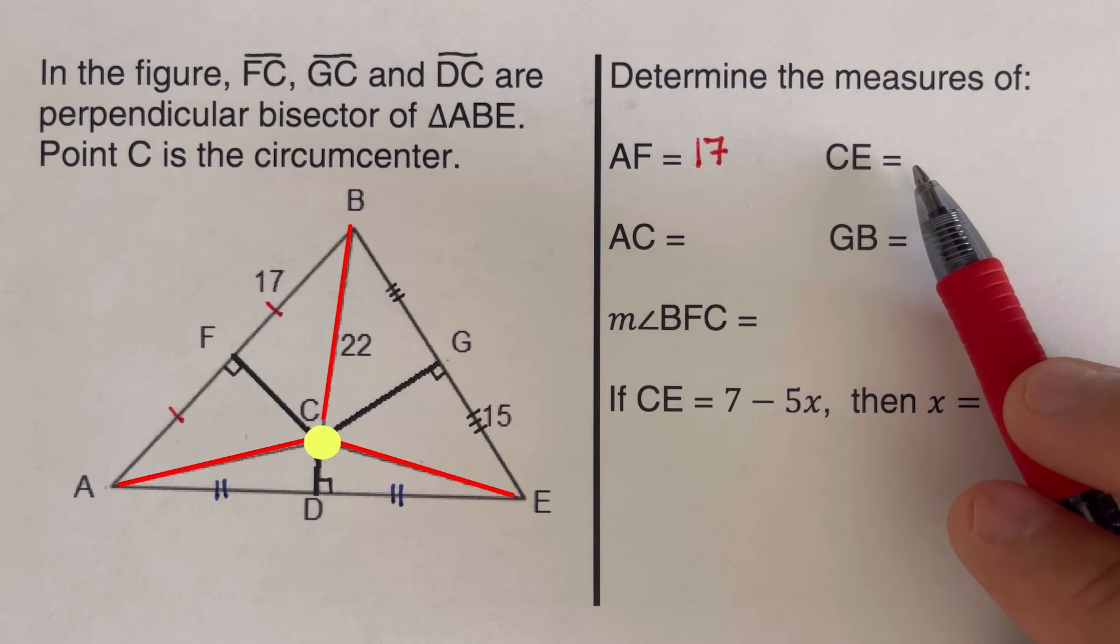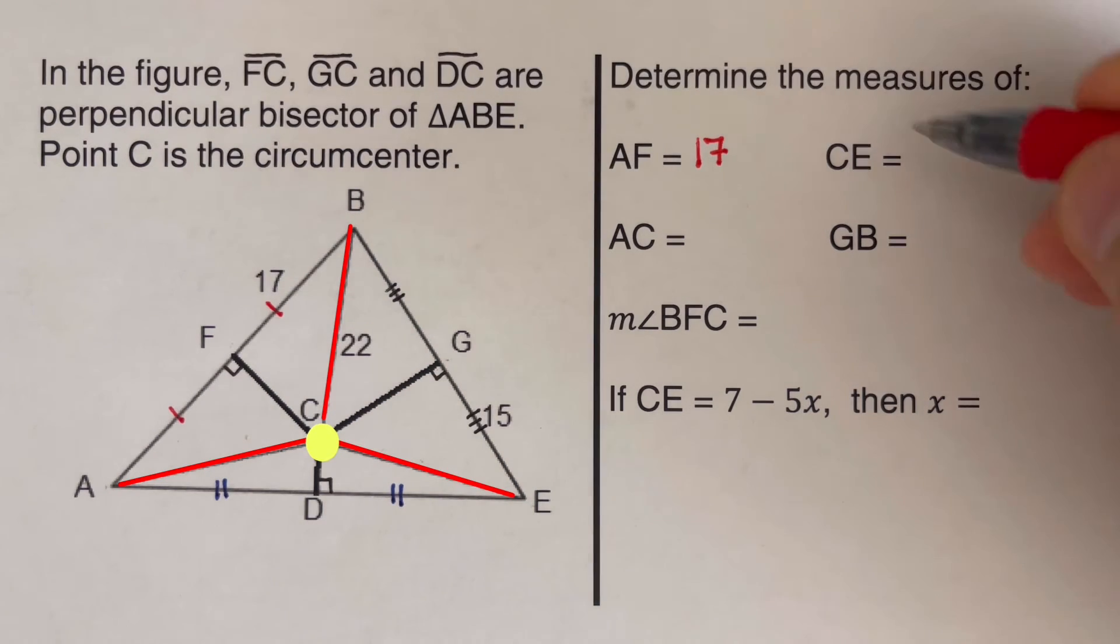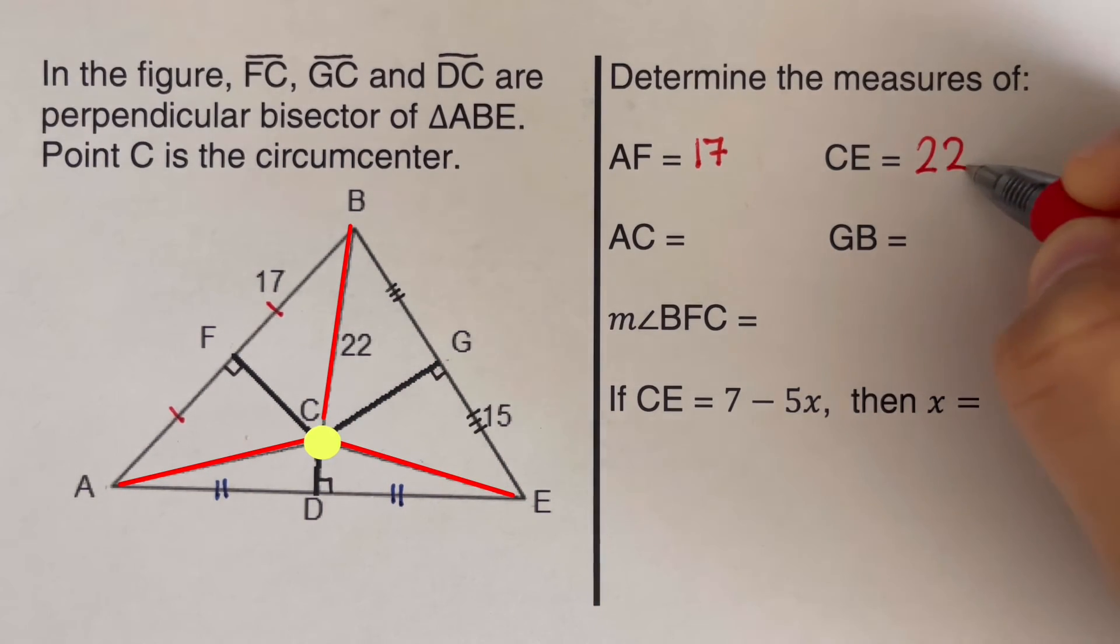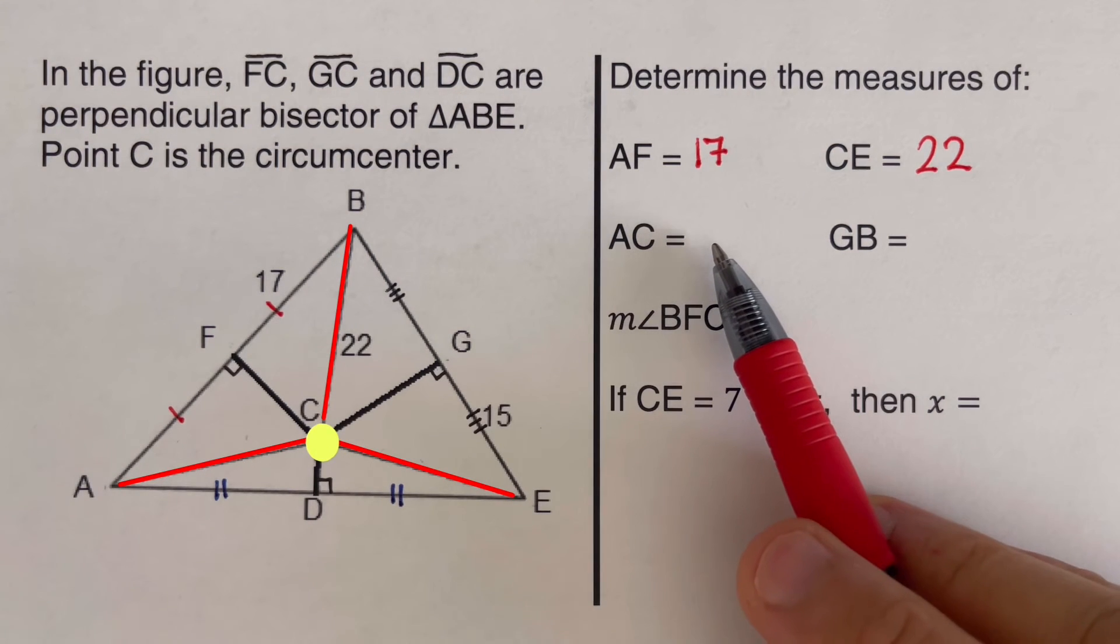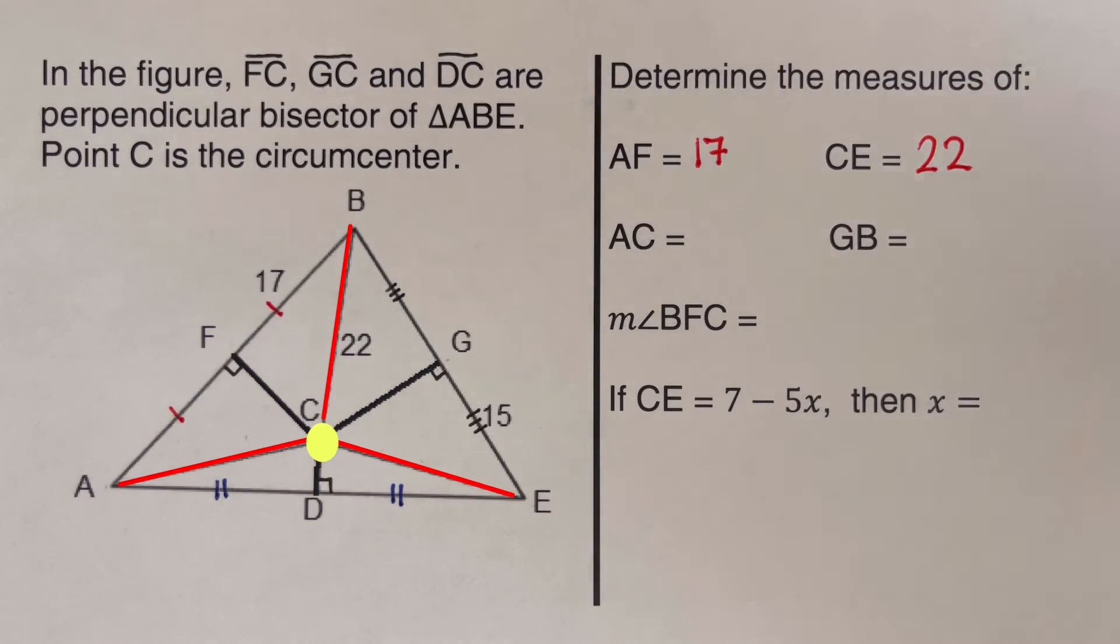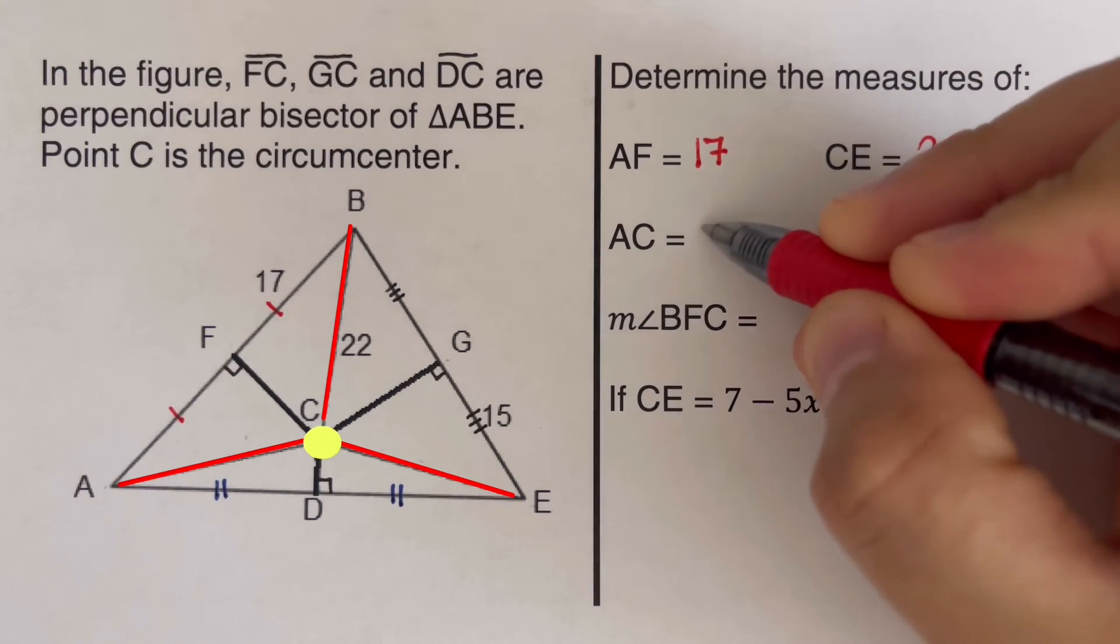Again, CE would be the same as that of BC. So this is 22 right here. And we're looking for AC as well. So AC would be the same as BC and CE. So this would also be 22.